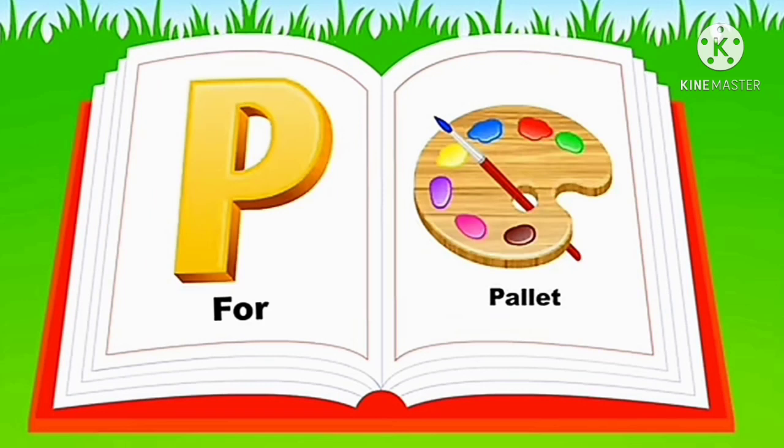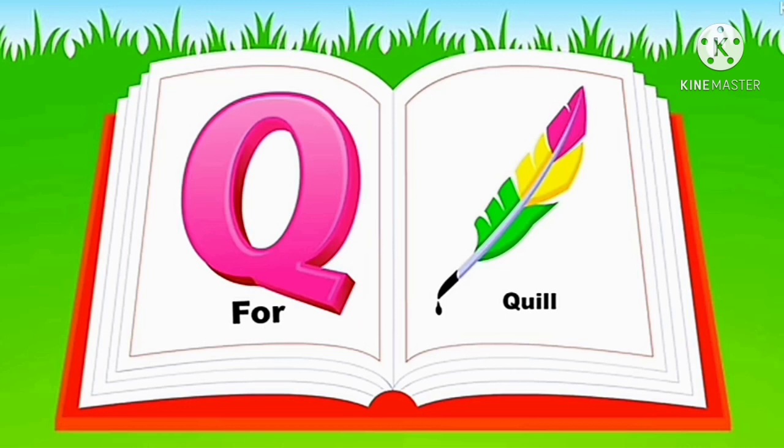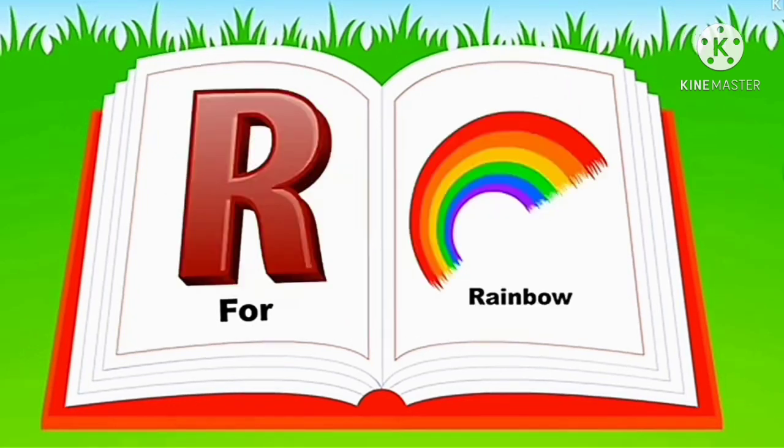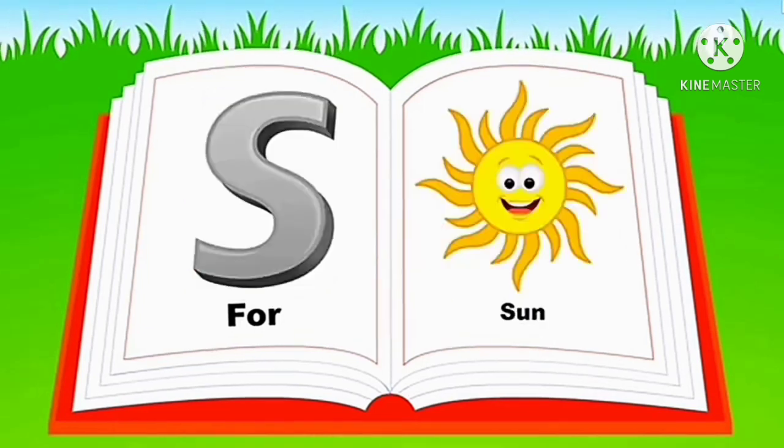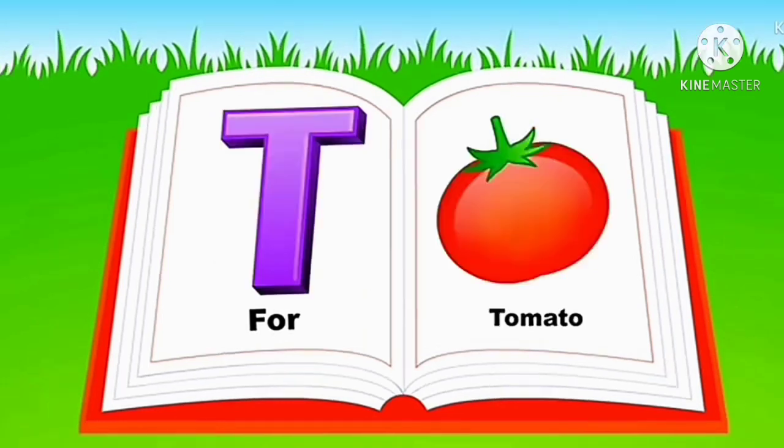P for parrot, Q for quail, R for rainbow, S for sun, T for tomato.